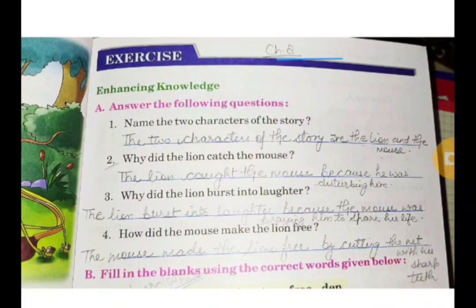Fourth is: How did the mouse make the lion free? The answer is the mouse made the lion free by cutting the net with his sharp teeth.